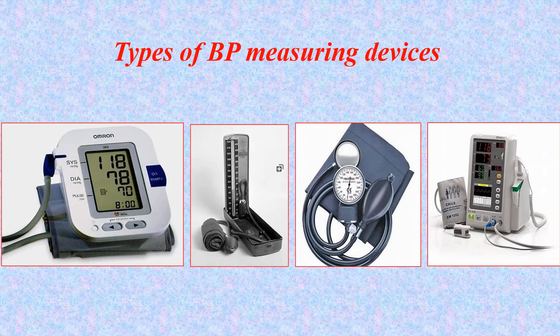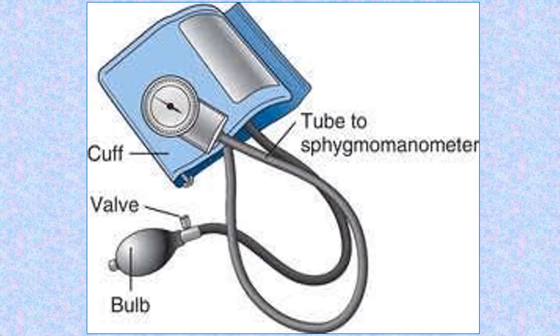We have four types of blood pressure devices. The first and last are automatic — they perform inflation and deflation automatically at the press of a button and give you the reading, for example 118/78, and also show the pulse, for example 70. The middle two devices are: the mercury device (sphygmomanometer with mercury column), and the aneroid gauge device which looks like a clock dial.